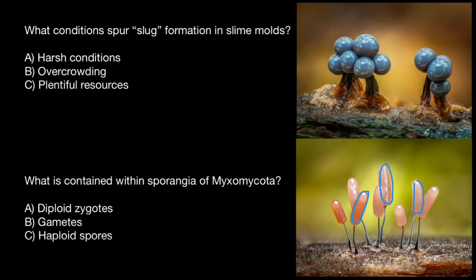Within sporangia we can find spores, and spores can be found in multiple numbers. The spores are 1N, so we can say haploid.